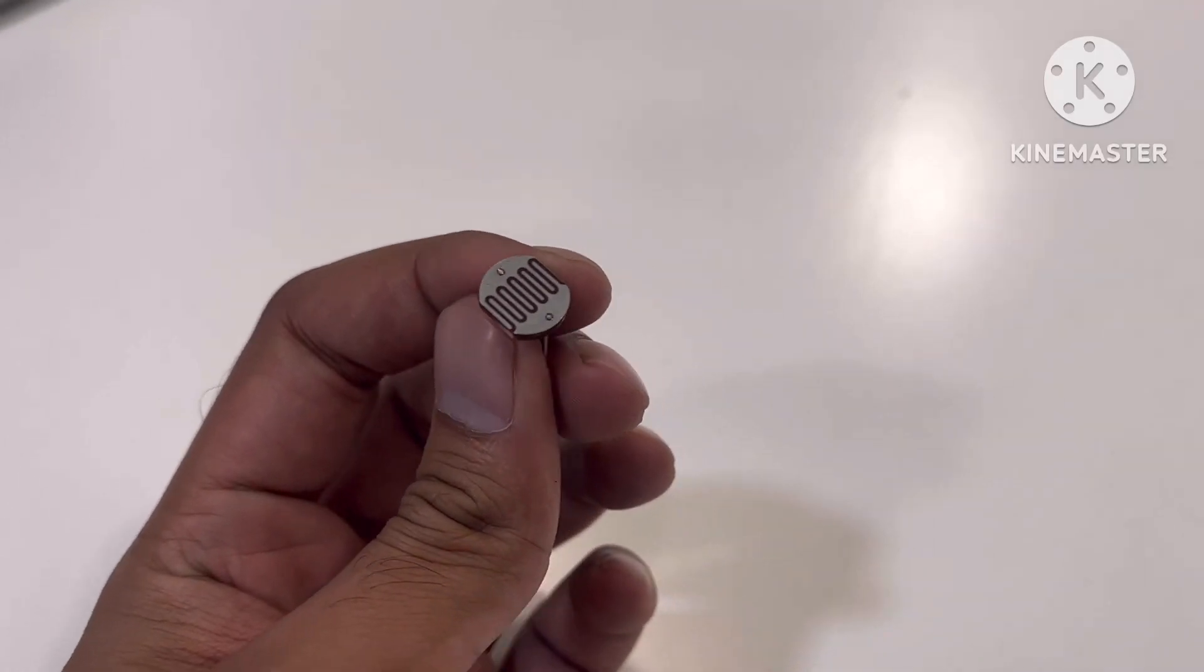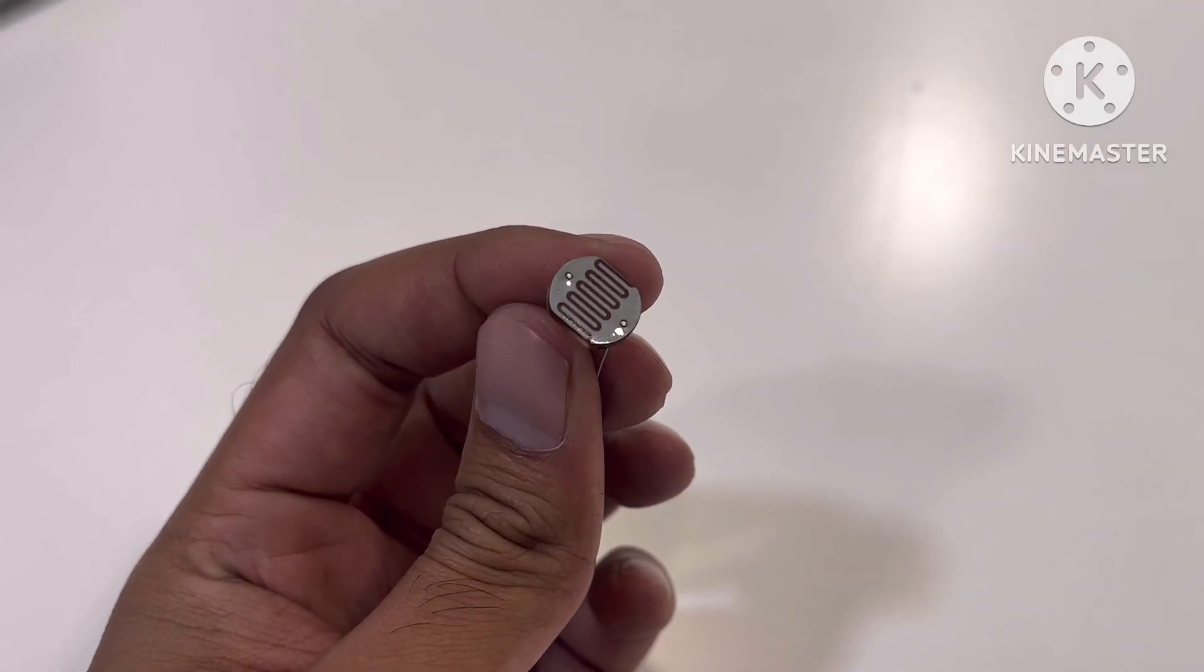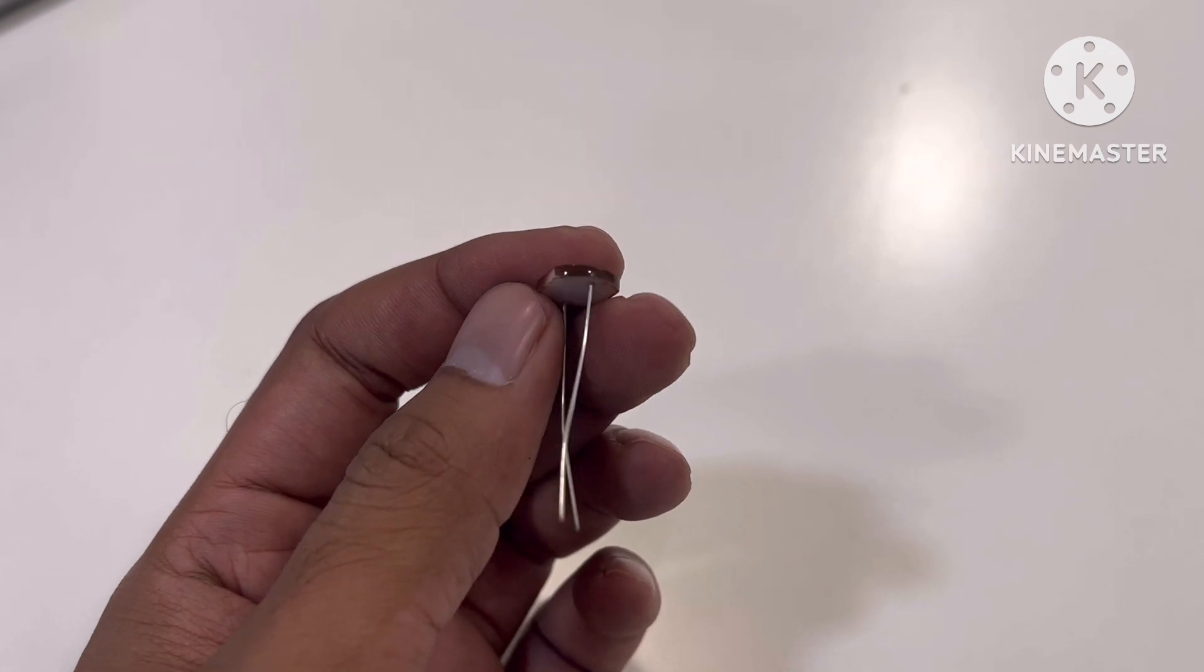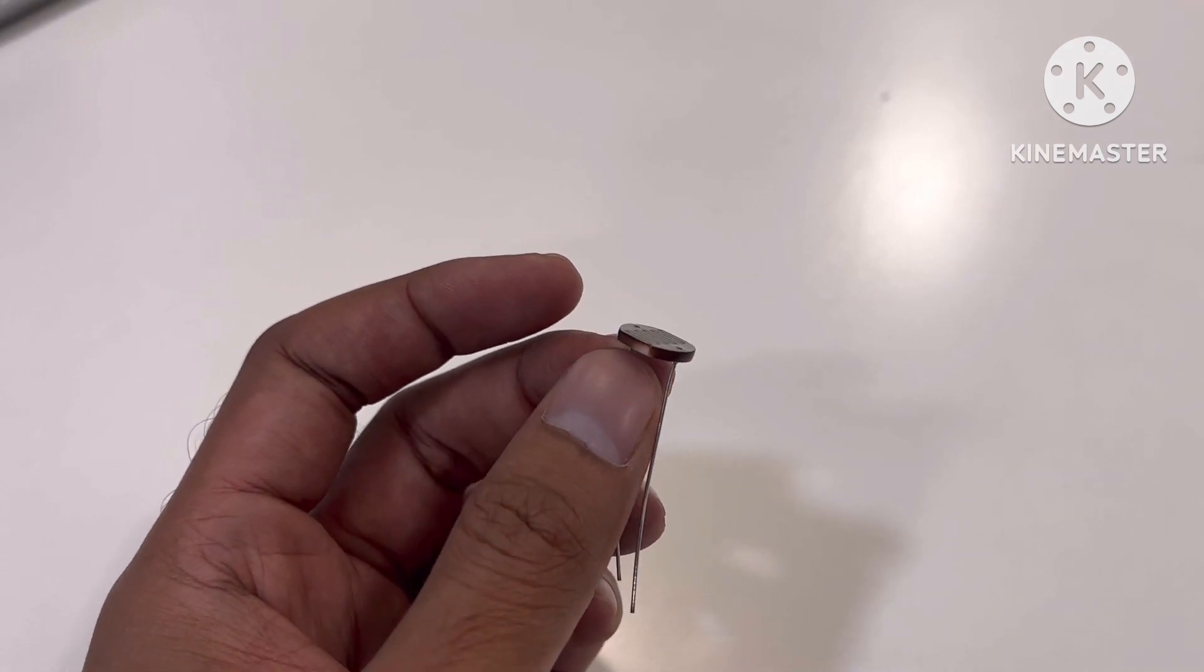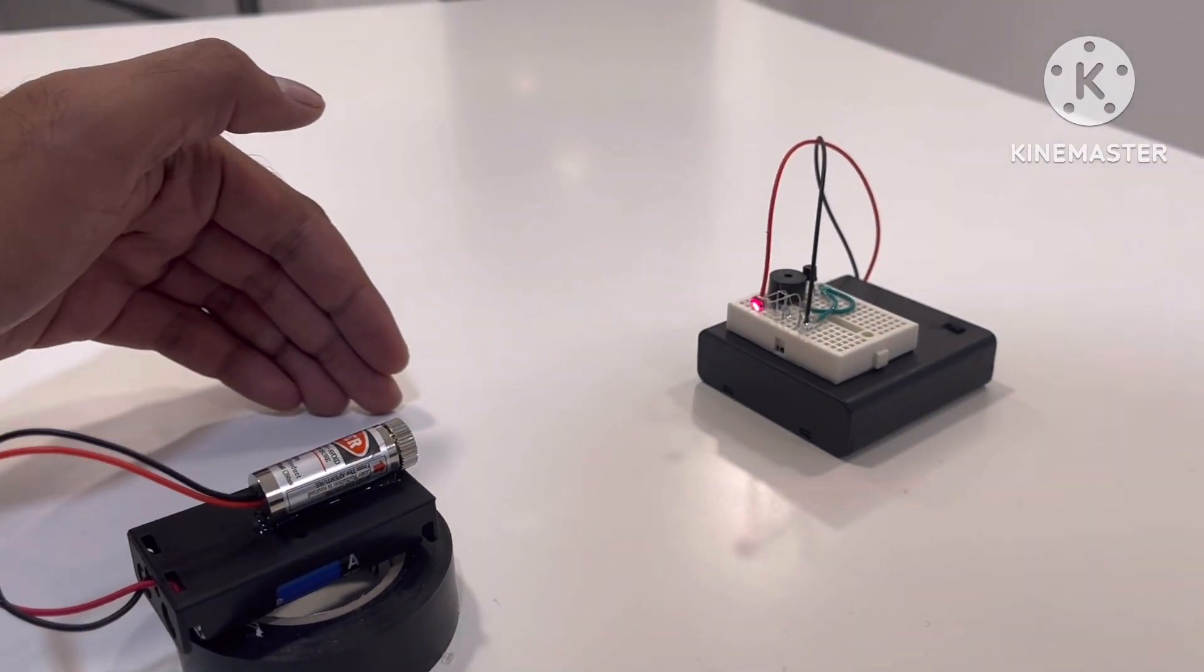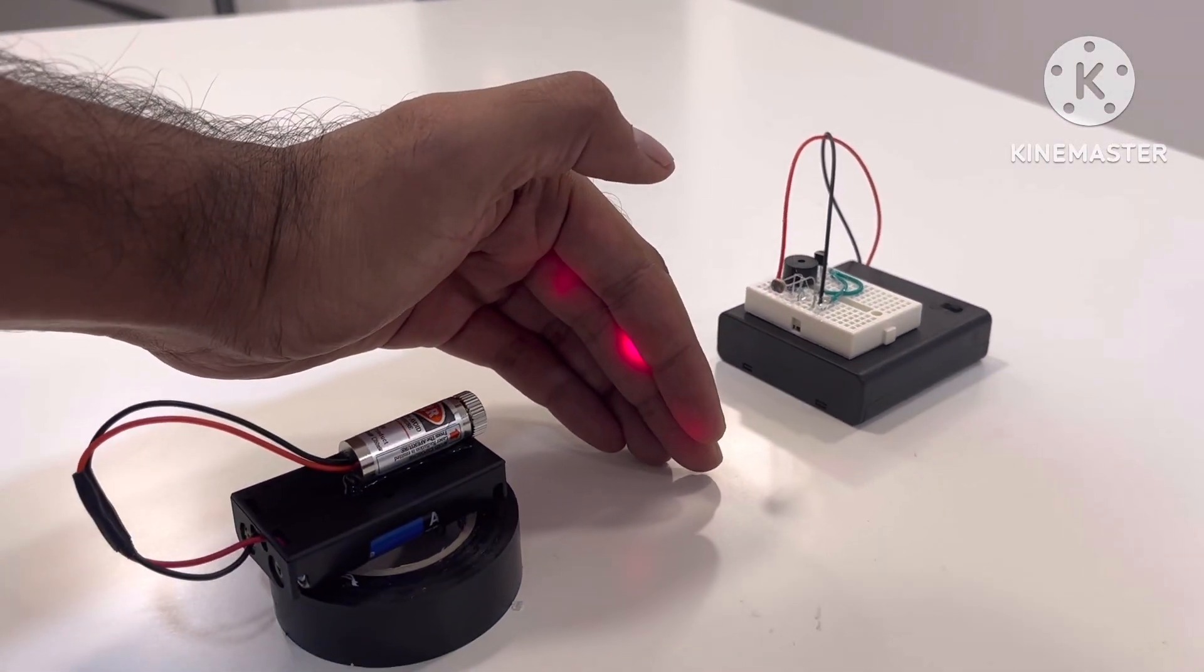This is an LDR. The full form of LDR is light dependent resistor. In this video we'll discuss about LDR, and we'll also make a small circuit using LDR.